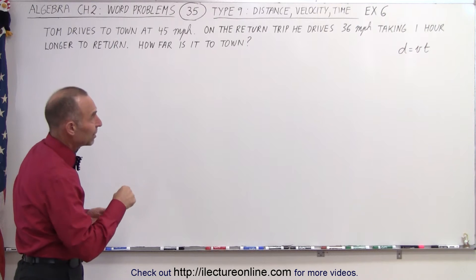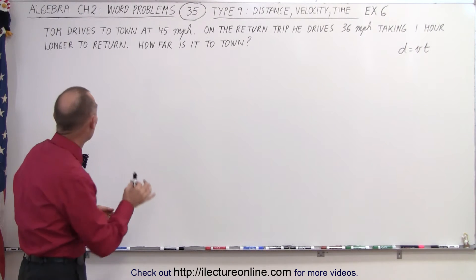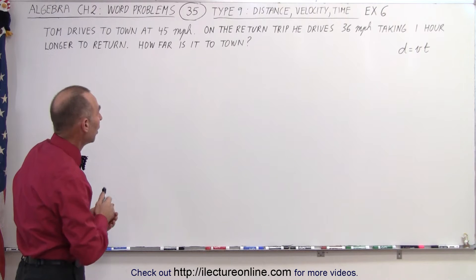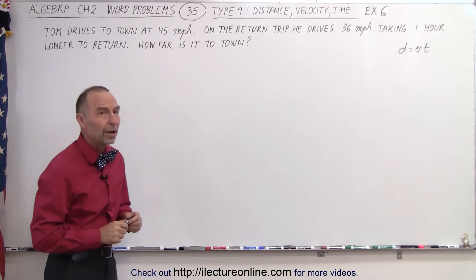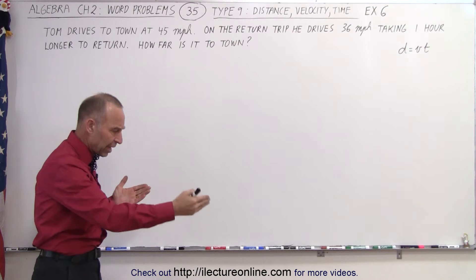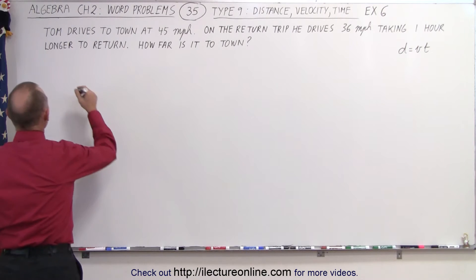On the return trip, he drives 36 miles per hour, taking one hour longer to return. How far is it to town? So he takes a trip out to town, he comes back. So let's do a little schematic of that.